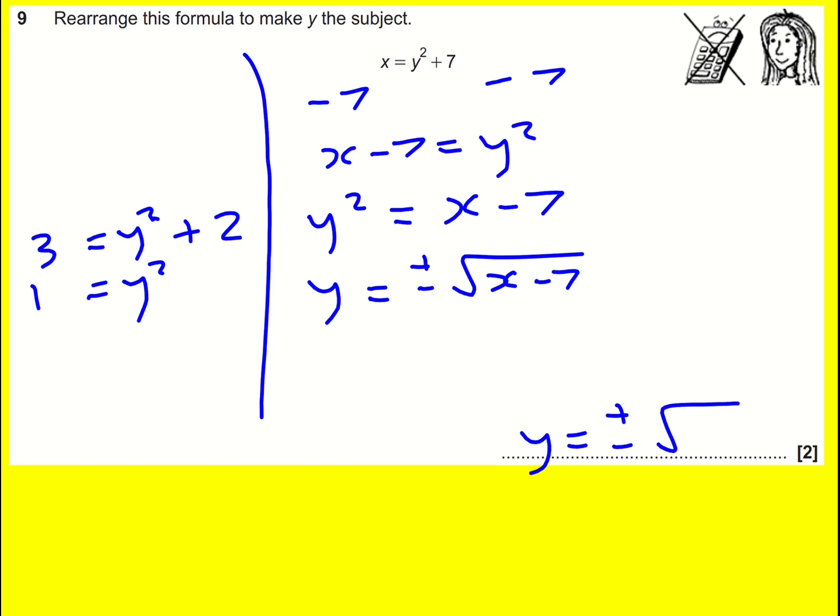Actually, if you don't include the plus and the minus, the mark scheme gives you four marks. But I say good practice is to remember when you're taking a square root to always include plus or minus.